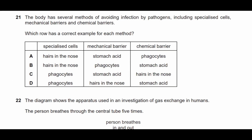Question twenty-one: which row gives the correct example of specialized cells, mechanical barriers, and chemical barriers against infection? Phagocytes are the specialized cells — hairs are not cells. The mechanical barrier is hairs in the nose. The chemical barrier is stomach acid, which breaks down pathogens. Therefore the answer is D.